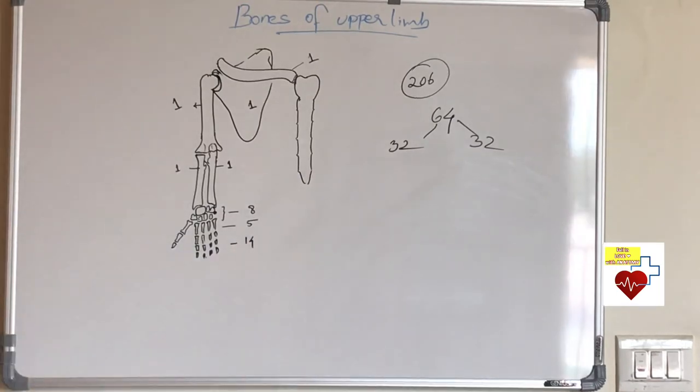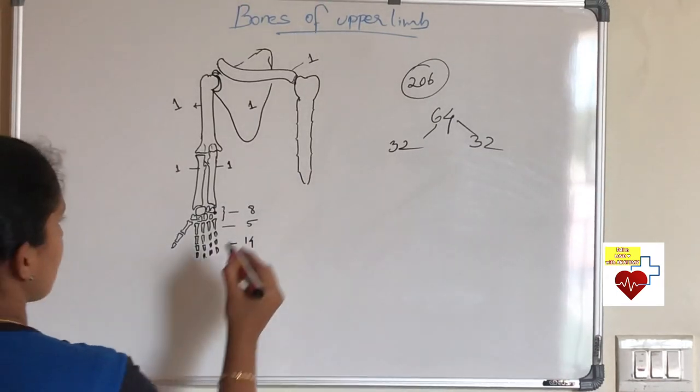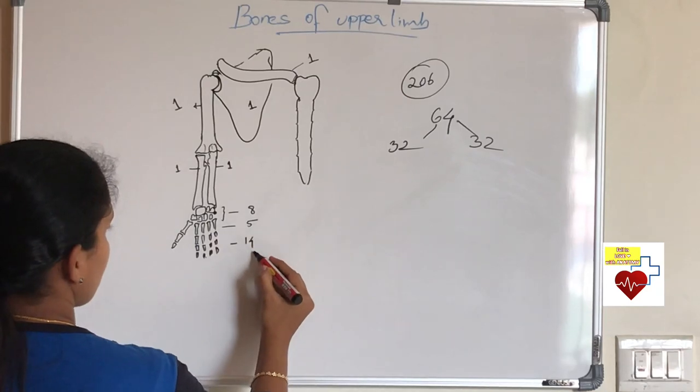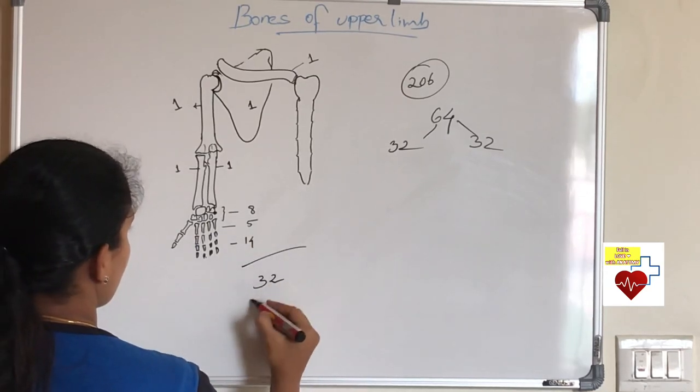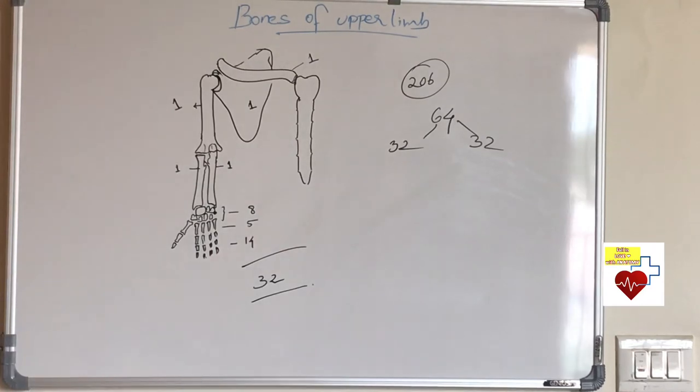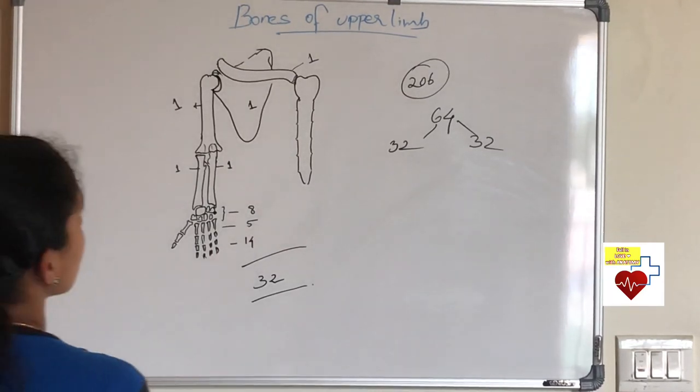That is because you have only two in thumb, three in four fingers. When you total you get 32 bones. So in one upper limb you have 32 bones. In two you have 64 bones.